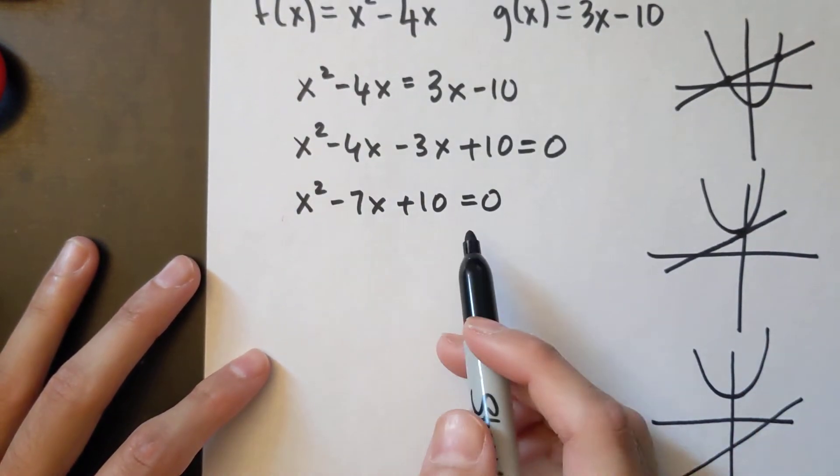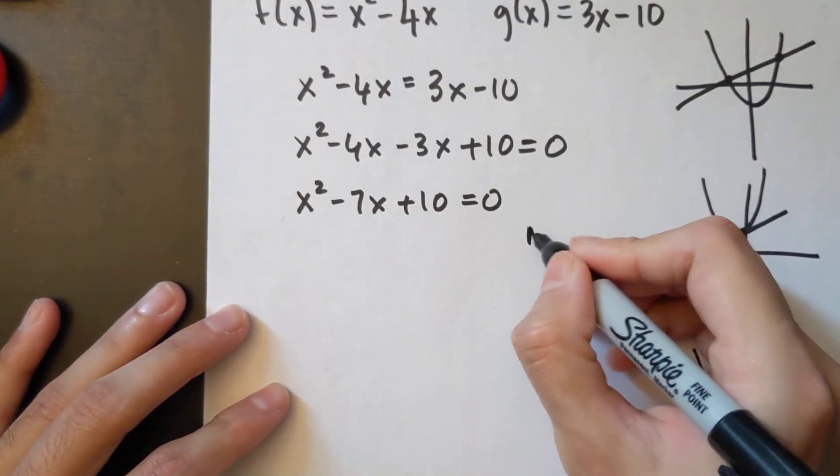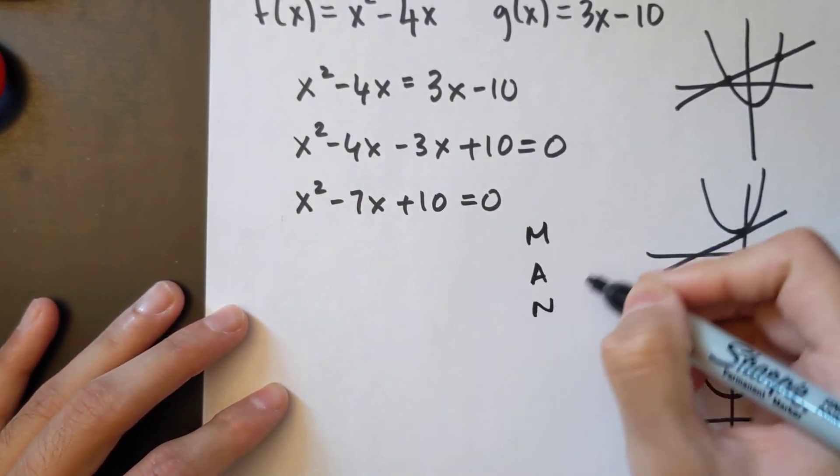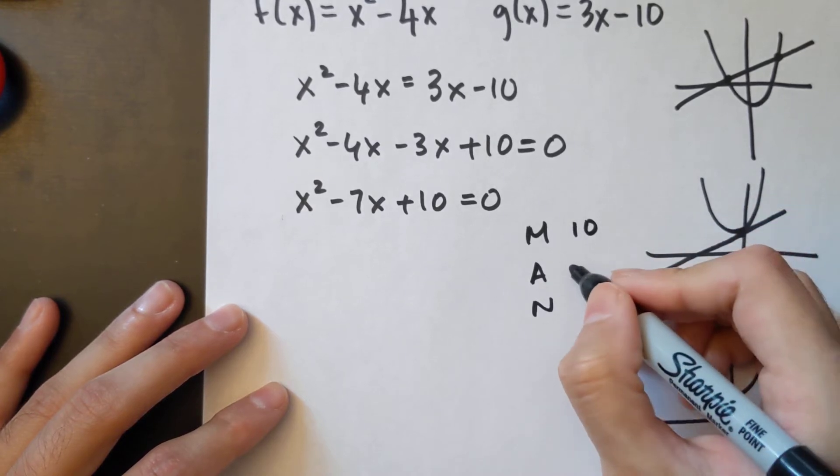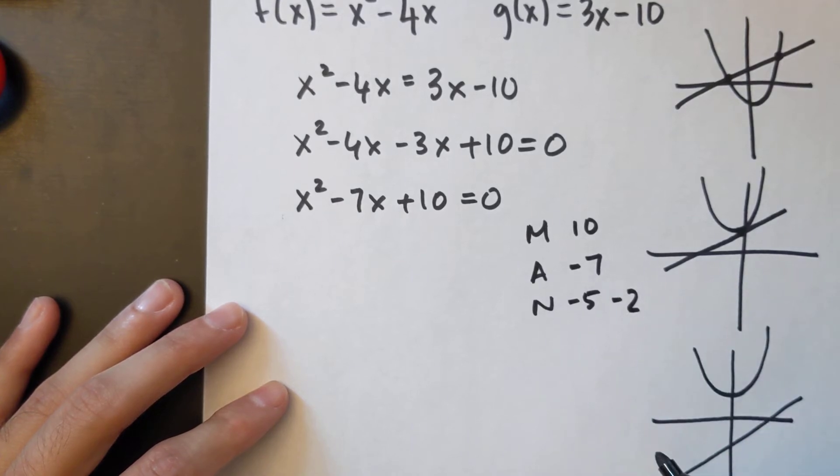And then at this point you either factor or solve with the quadratic equation. In this case I can factor with my Mann method. My m is 10, my a is negative 7, my two numbers are negative 5 and negative 2.